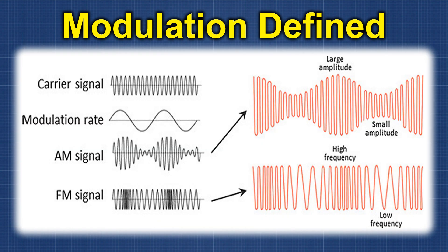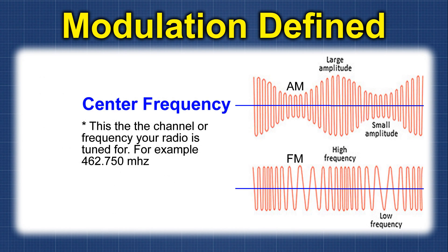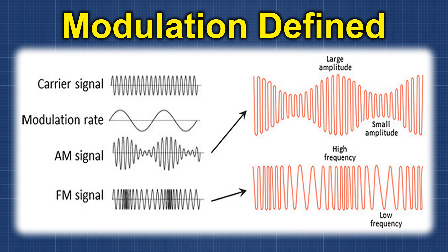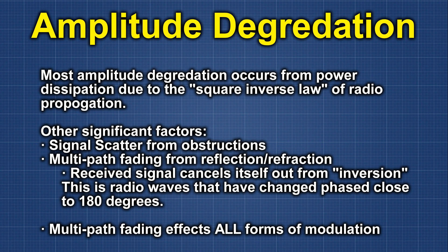Both modes have a carrier wave that is centered right on the frequency. So whatever frequency or channel you put your radio on, that is where the carrier wave is centered and tuned on. With AM or amplitude modulation, the overall strength — referred to as the amplitude — is varied to carry your information. With frequency modulation, the frequency is slightly varied to carry that information.